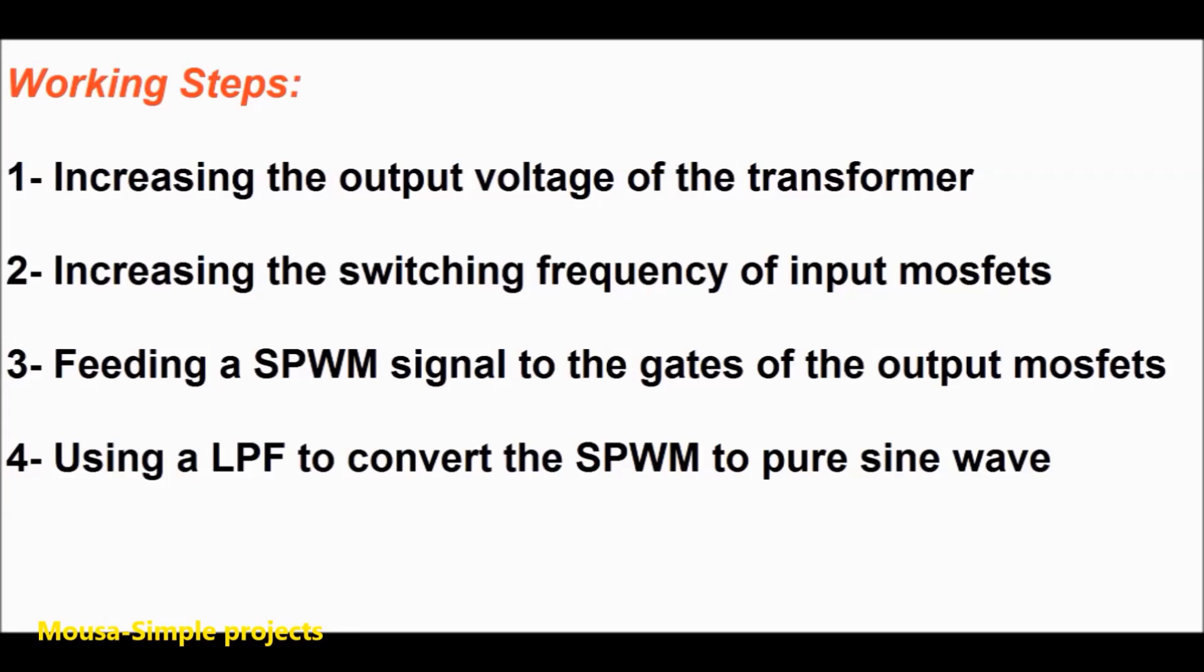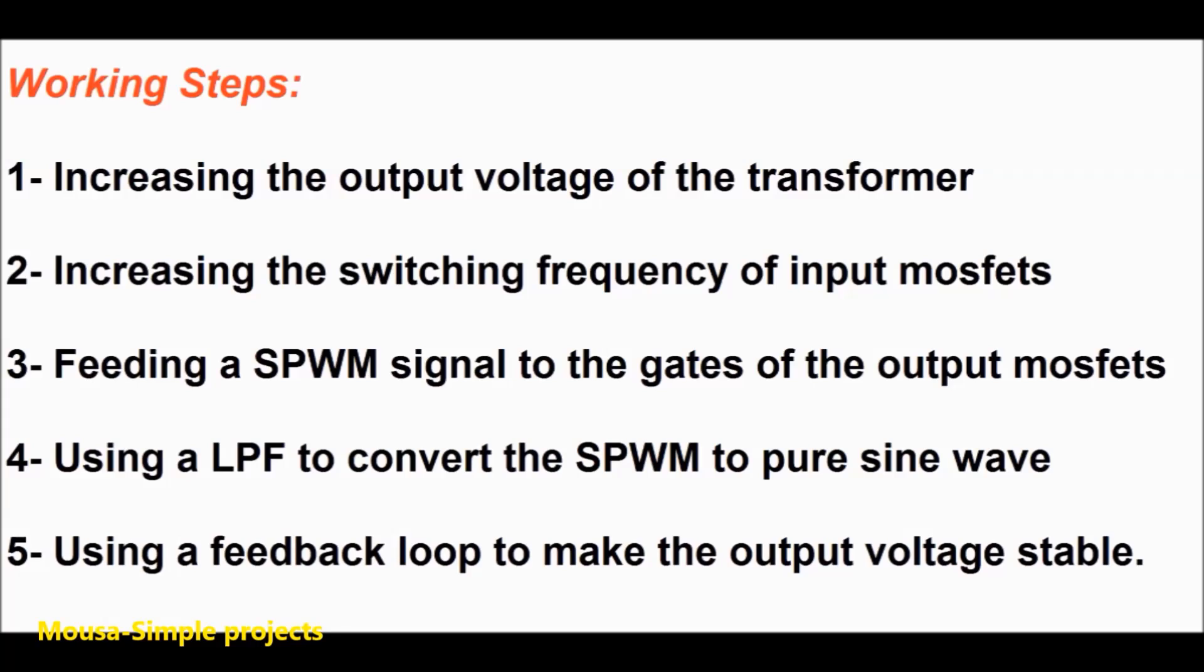Step number four is using a low-pass filter to converting the SPWM to pure sine wave. And finally, step number five is using a feedback loop to make the output voltage stable.